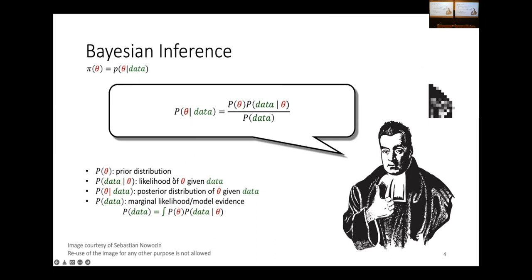P(theta) is the prior distribution. P(data | theta) is the likelihood of the parameters given data — in deep learning, you often use cross-entropy loss or L2 loss, which correspond to the negative log likelihood of the parameters. We also have what is called the marginal likelihood, which is the probability of your data appearing under the model, requiring computation of an integral. This is essentially the whole framework of Bayesian inference, applicable not only to Bayesian neural networks but to any Bayesian modeling paradigm.